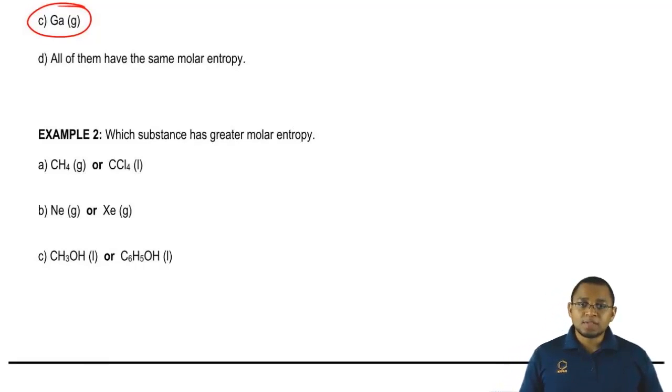We're going to say which substance, for example 2, which substance has greater molar entropy. We're going to compare these two, these two, and these two. Within those three choices, we're going to choose the best out of each one.